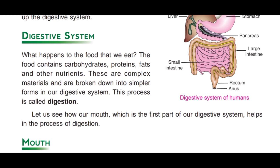Let us learn about the digestive system. What happens to the food that we eat? The food contains carbohydrates, proteins, fats and other nutrients. These nutrients come from complex materials and our digestive system breaks them down into simpler forms. This process is called digestion. Digestion is the process of breaking down complex food materials into simpler forms in our digestive system.